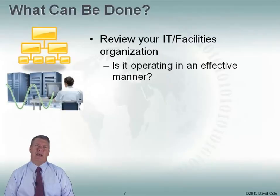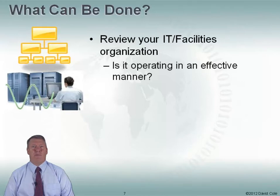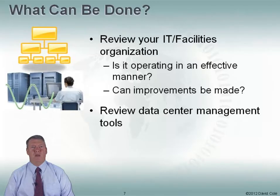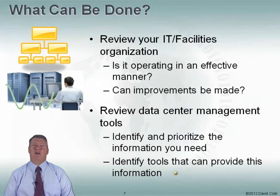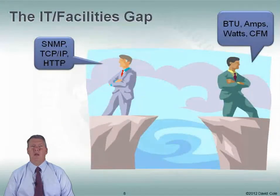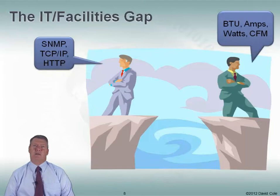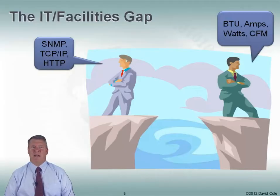So what can be done about this? One of the things we want to take a look at is reviewing our organization — how well are IT and facilities organizations working together? Are they operating in an effective manner? Are there improvements that can be made? A lot of times in companies there's a gap between IT and facilities. It's like they're talking different languages. My facilities guy is talking about BTUs, amps, watts, and cubic feet per minute of airflow, while my IT guy is talking about SNMP, TCP/IP, and web — it's like they're speaking whole different languages.